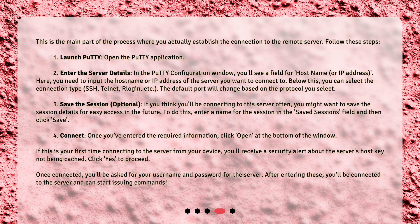Step 4: Connect. Once you've entered the required information, click Open at the bottom of the window. If this is your first time connecting to the server from your device, you'll receive a security alert about the server's host key not being cached. Click Yes to proceed. Once connected, you'll be asked for your username and password for the server. After entering these, you'll be connected to the server and can start issuing commands.